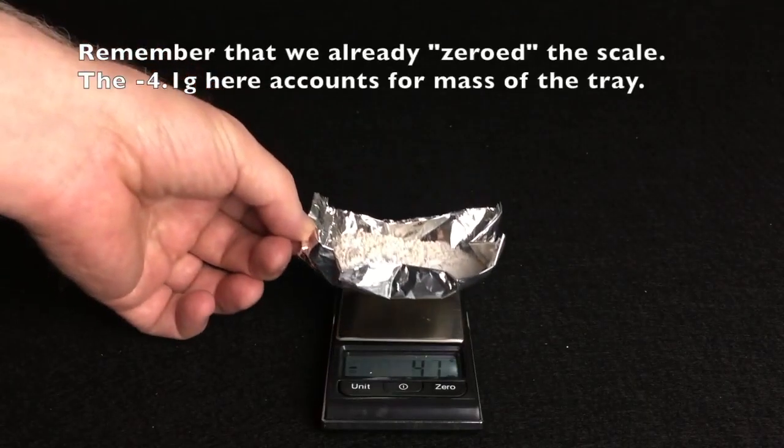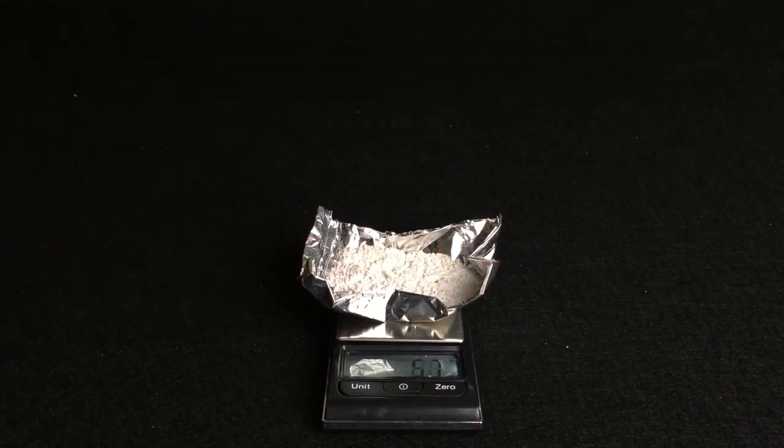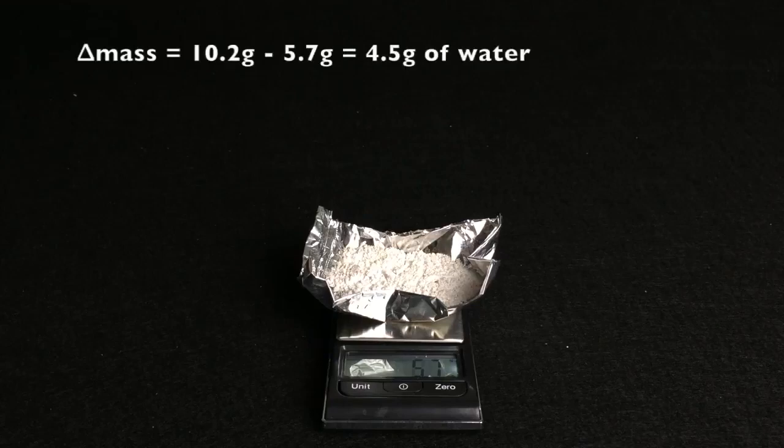Then let it cool for a few minutes and weigh it again. You now know the mass of the dry salt, and the difference between your two measurements is the mass of the water that escaped. So we started with 10.2 grams of magnesium sulfate, and we drove away 4.5 grams of water.